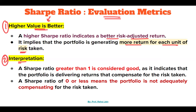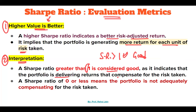Second point is interpretation. A Sharpe Ratio greater than one is considered good, as it indicates that the portfolio is delivering returns that compensate for the risk taken. If the Sharpe Ratio is zero or less than zero, it means the portfolio is not adequately compensating for the risk taken.